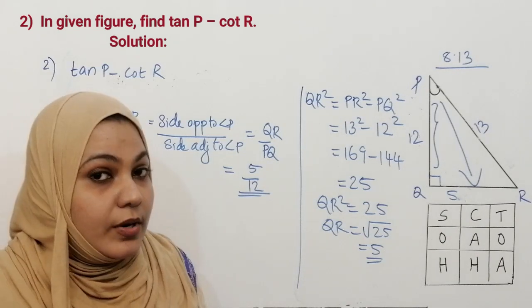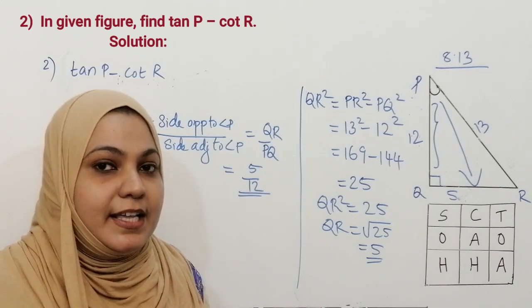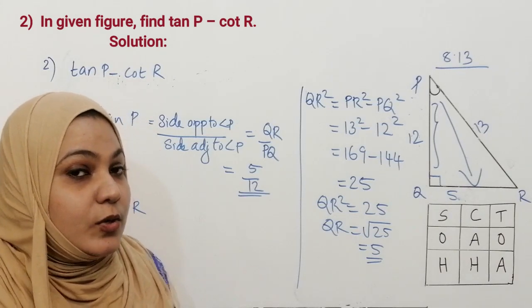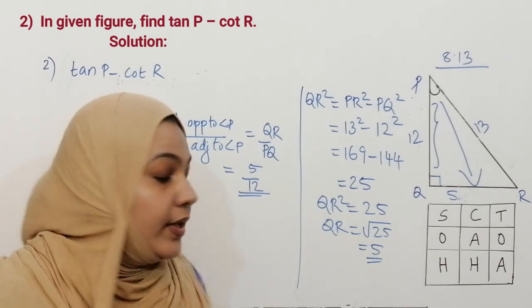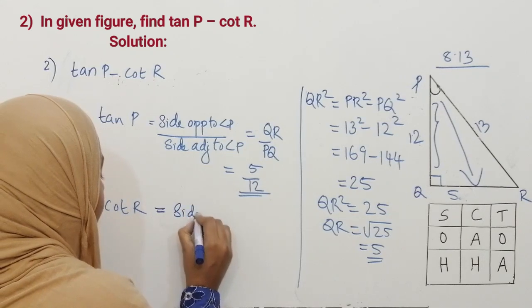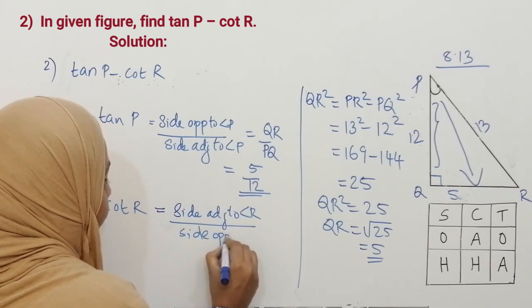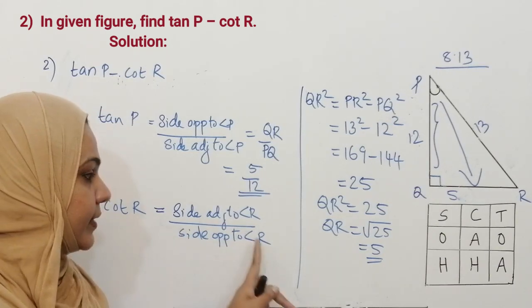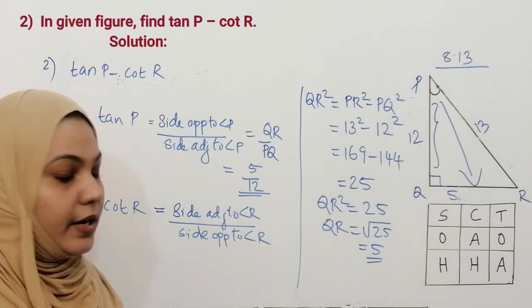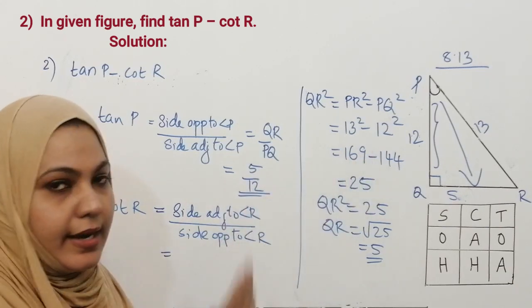The second part of this question is cot R. We have already discussed all the trigonometric ratios in my previous videos — if you are new to my channel please watch those. Tan P is 5 by 12. Cot is the reciprocal of tan, so cot R equals the side adjacent to angle R divided by the side opposite to angle R. The reference angle in this part is R, so do not confuse. I am drawing another triangle for clarity.